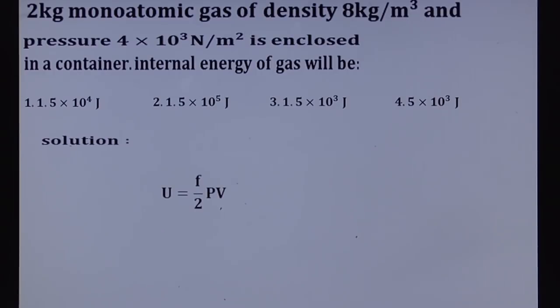Substitute all the values here. Yes, very good. F equal to 3 by 2 is there in the formula, P given as 4 into 10 cube, directly we are substituting, V is equal to mass by density, 2 is the mass, given density is 8, therefore 2 by 8. What is 2 by 8 value? 1 by 4. This 4 and this 4 gets cancelled. Now, what is the value of 3 by 2? 3 by 2 value you can write as 1.5. Therefore, here U value is equal to 1.5 into 10 cube joules.